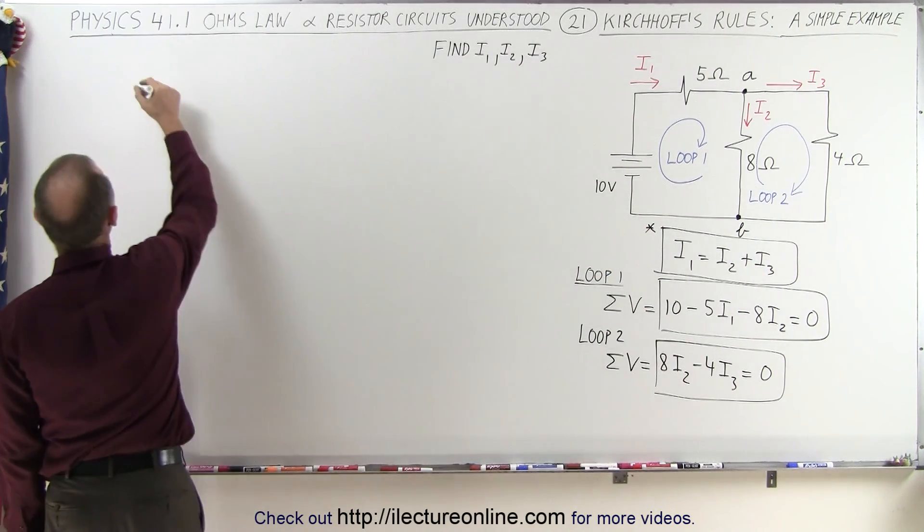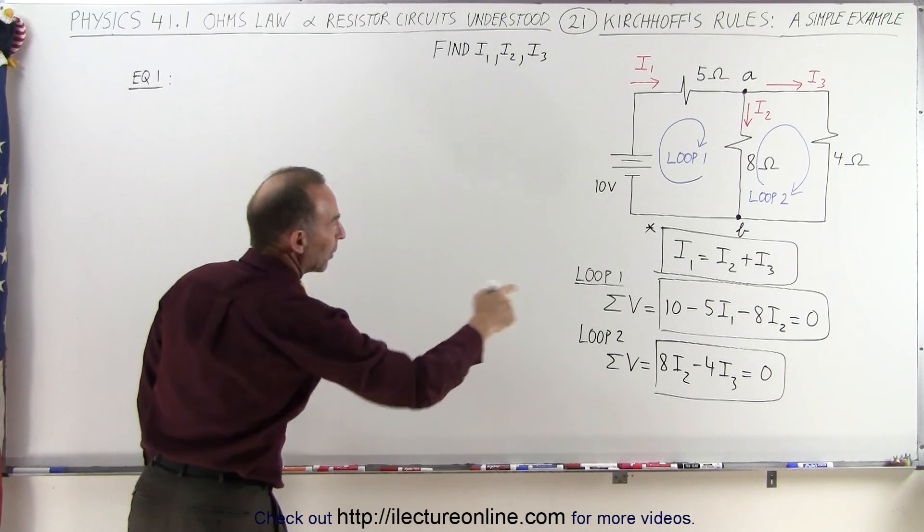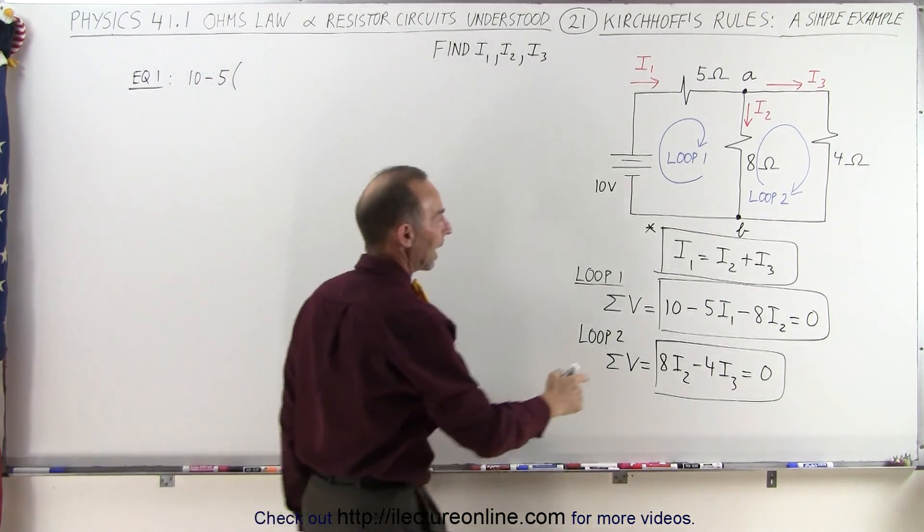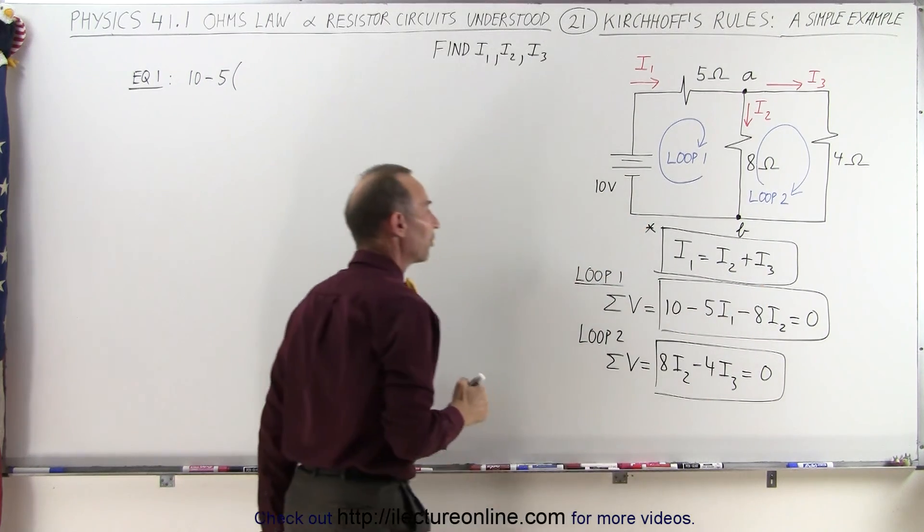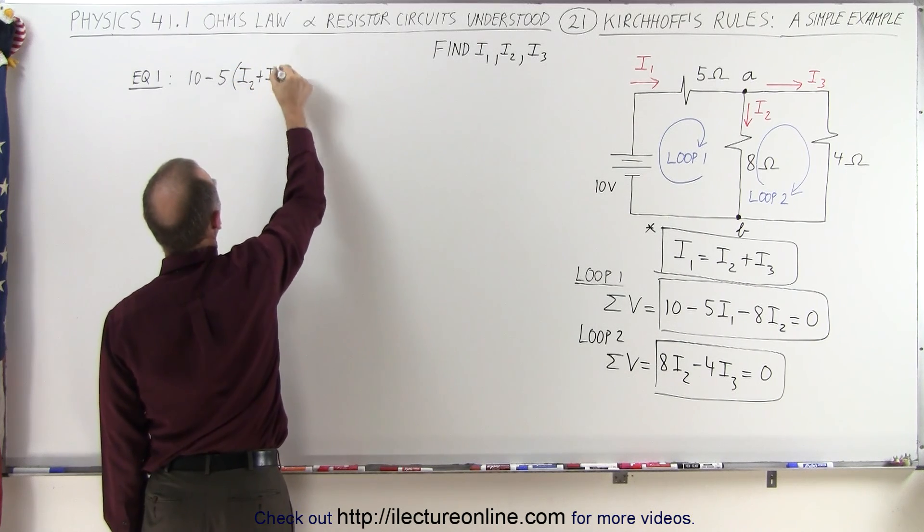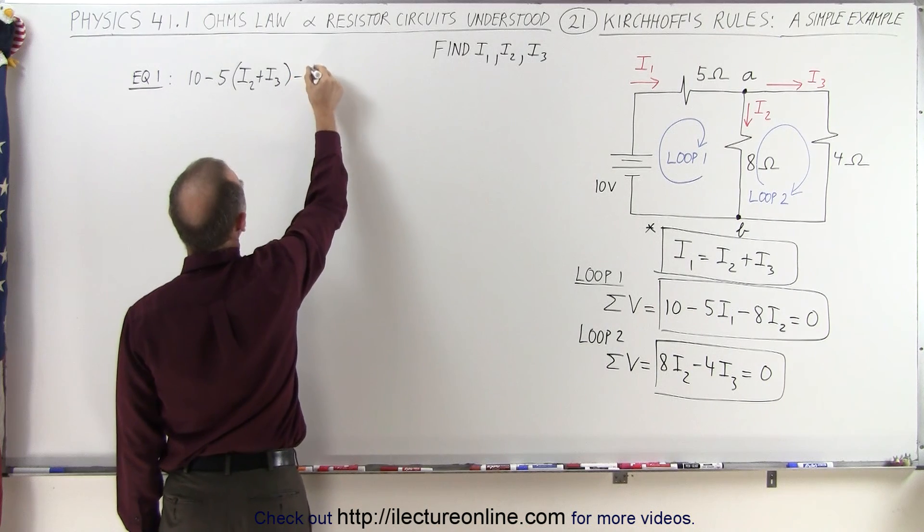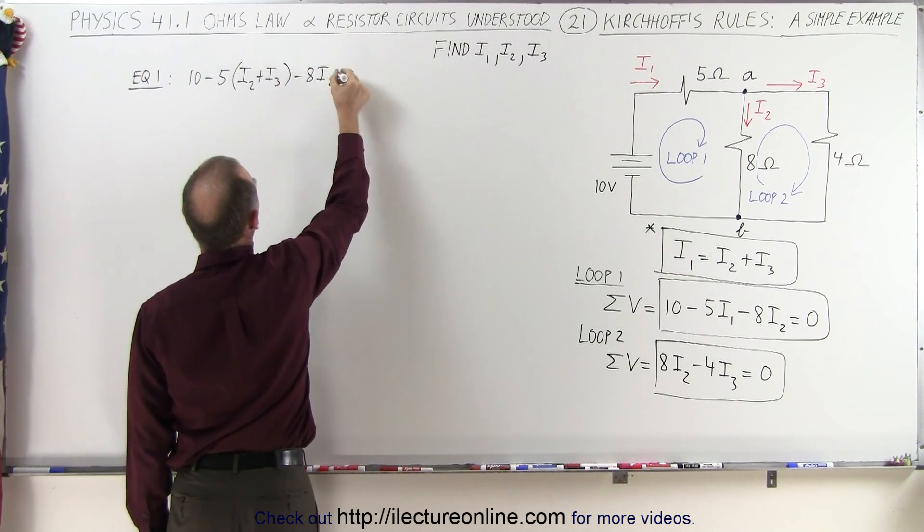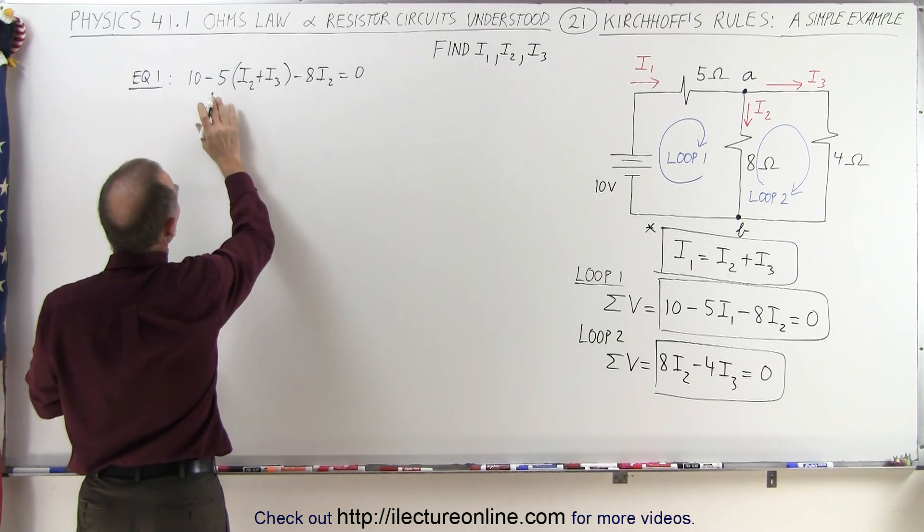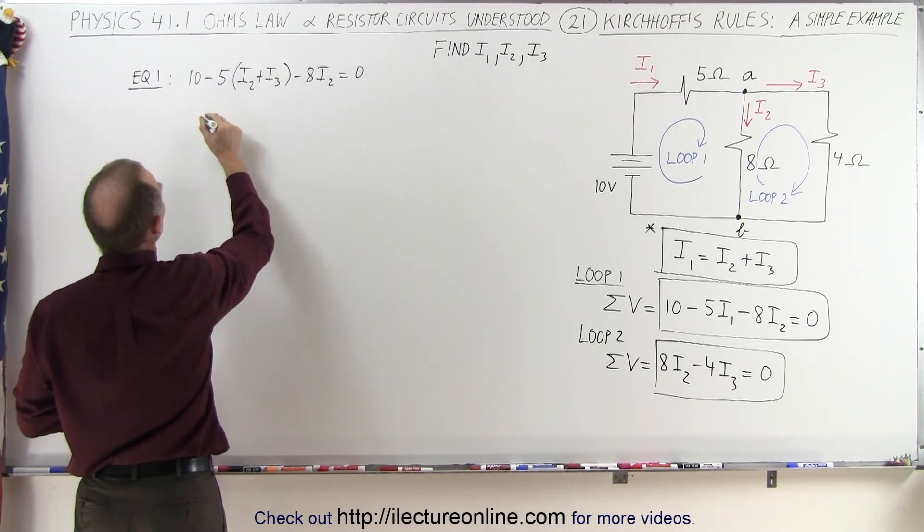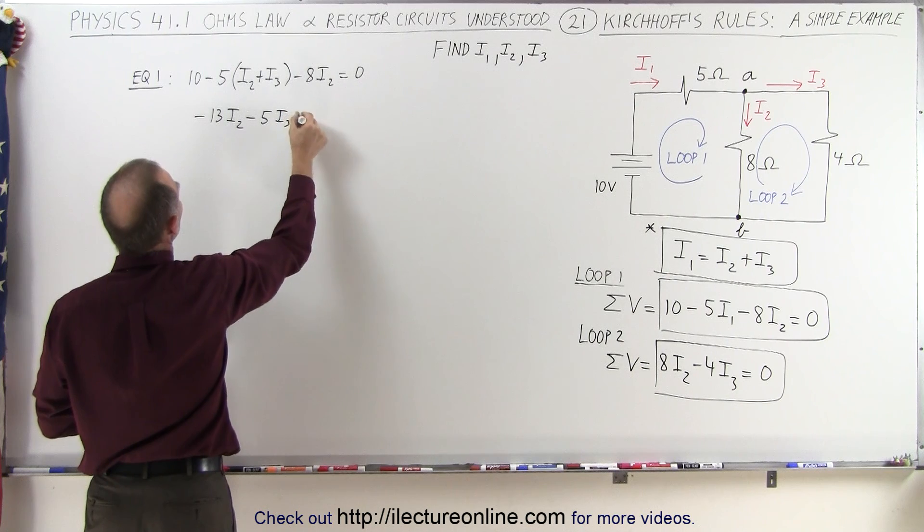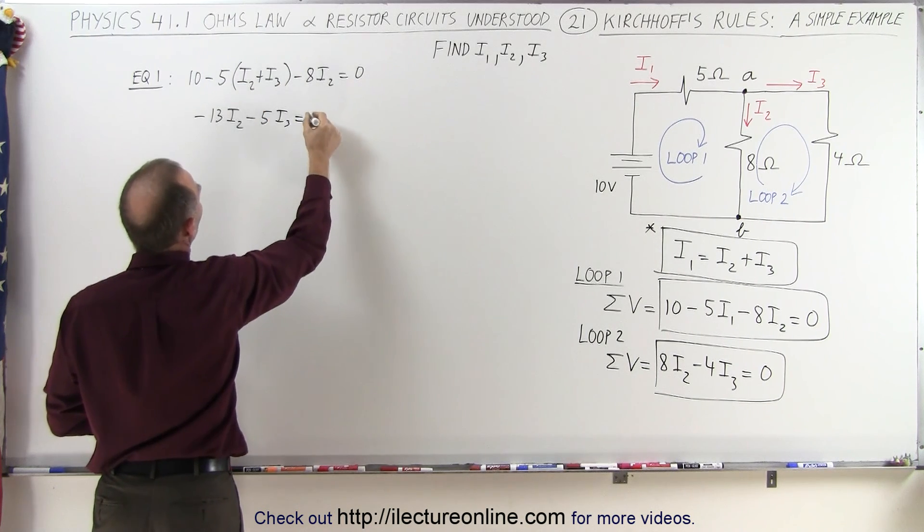Now notice there's no I1 here, but there's one over here, so we're going to substitute I1 for I2 plus I3. So on equation one, we're going to rewrite that equation, so we have 10 minus 5 times, but instead of writing I1, we're going to write what I1 is equal to in terms of I2 and I3. That would be I2 plus I3, and then we still have minus 8I2, and that is equal to zero. So now when we simplify this, we combine all the I2s together, so we have minus 5 minus 8, that would be minus 13I2 minus 5I3 is equal to, and bring the 10 across, a minus 10.